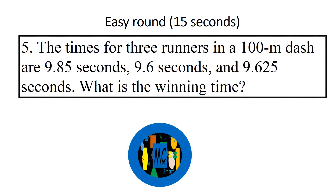The times for 3 runners in a 100 meter dash are 9.85 seconds, 9.6 seconds, and 9.625 seconds. What is the winning time?